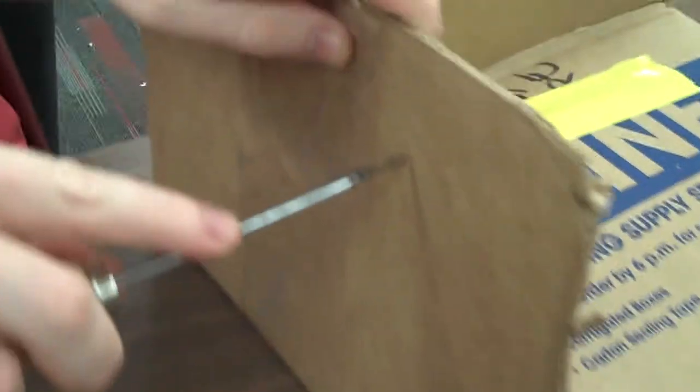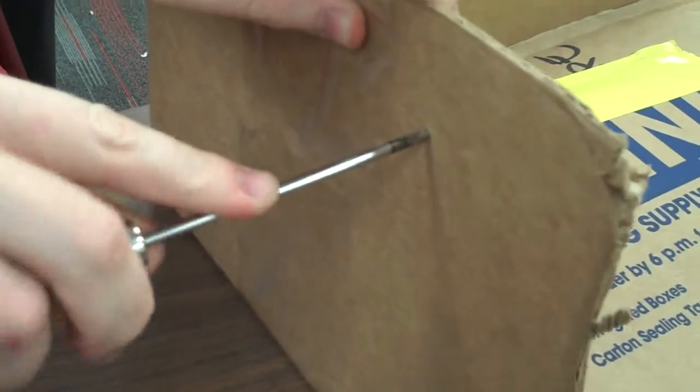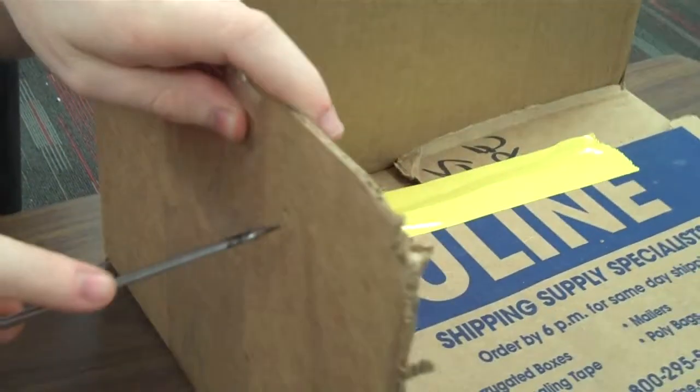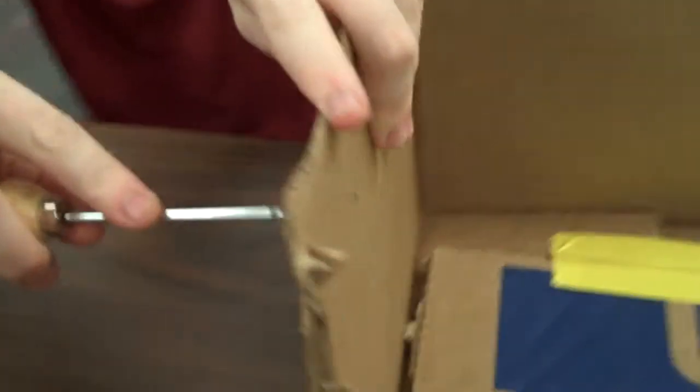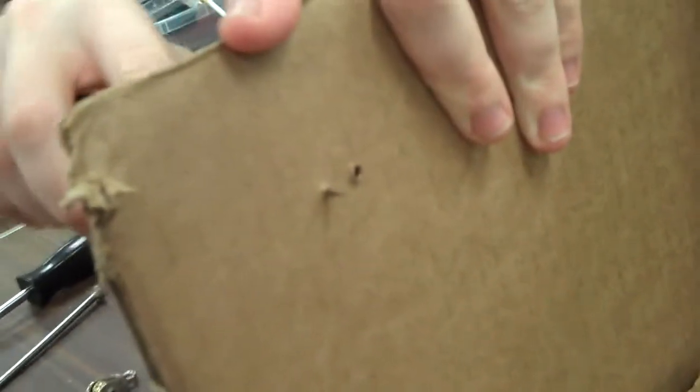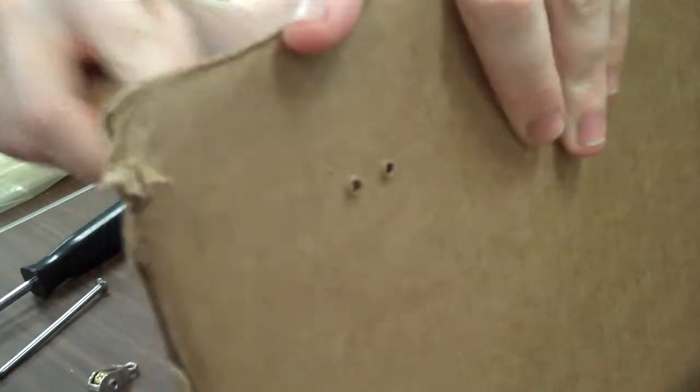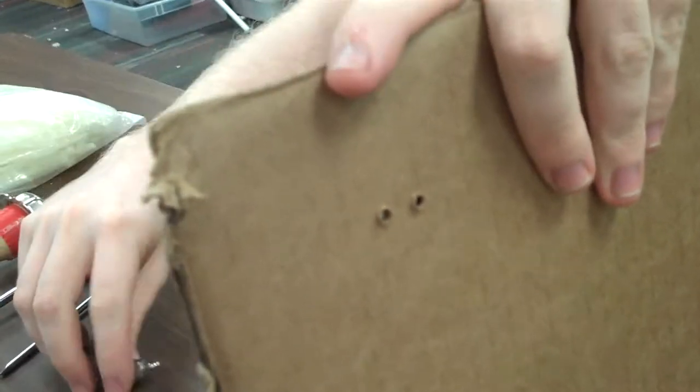I'm going to take the ice pick and punch a hole straight through, being careful not to stab myself on the other side. I'm going to punch a second hole right next to it with enough room for whatever object I'm tying on there.